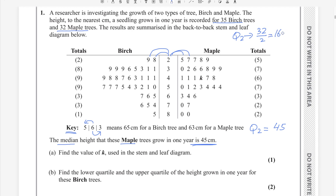32 divided by 2 gives a whole number, so we always convert it to a decimal: the 16.5th value will be the median. The 16.5th value means we take the average of the 16th and 17th values. Counting through the maple data — 5, plus 7 = 12, then 13, 14, 15, 16 — so this is the 16th value. The 16th value reads as 40 + k, and the 17th value is 40 + 7 = 47.